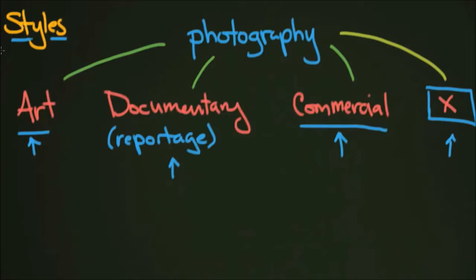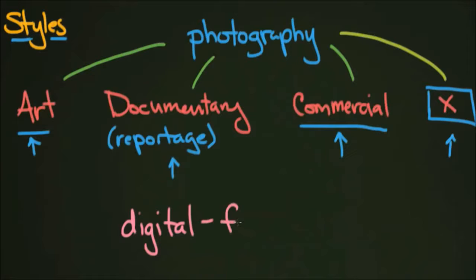You can do all these different styles of photography in a few different ways these days. In the modern world, we have digital photography — the way most of us take photographs today, though it's actually not that old. When I was a kid, you didn't have digital cameras; you had film cameras, which is how photography was performed for a long time. You also have video — some people are surprised, but video is photography: it's just photography moving at about 24 pictures per second.